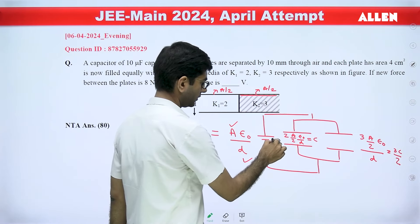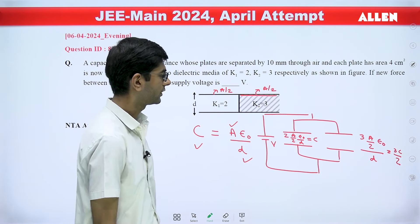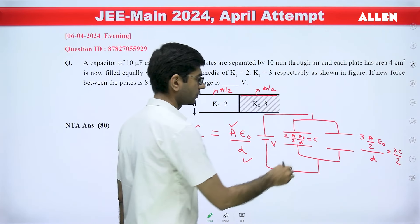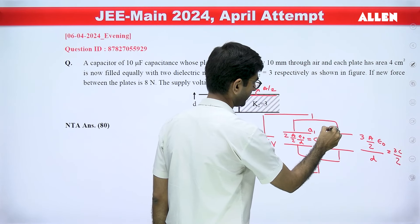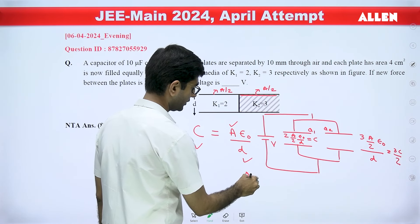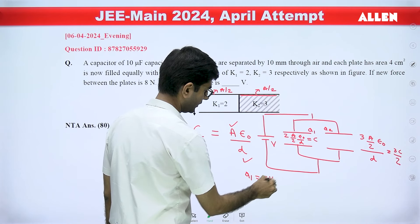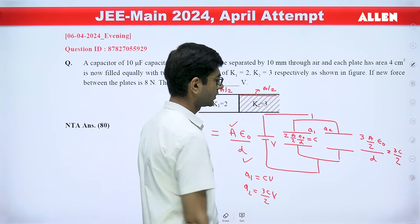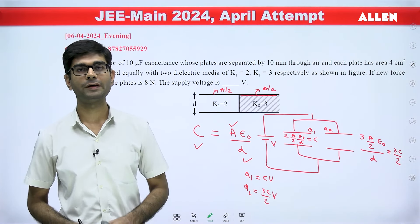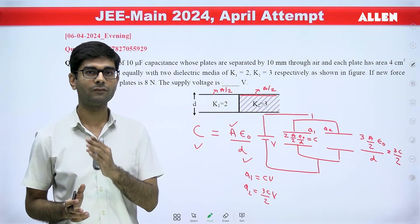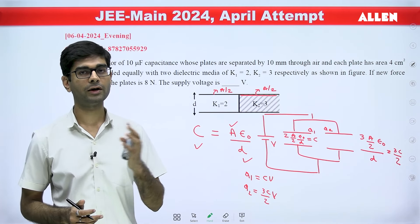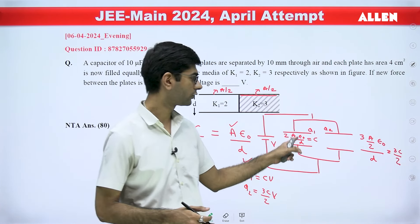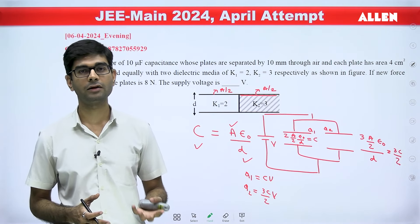Using the simple formula for parallel capacitors, the potential difference across both capacitors is V, so we can easily find the charge on each plate. The charge on one plate will be CV and the charge on the other plate will be (3C/2)·V. Since the charge on each plate is known, we can find the force exerted by one plate on the other using Q²/(2A·ε₀). We find the force for each pair and add them to get the final answer.